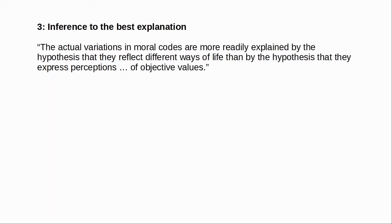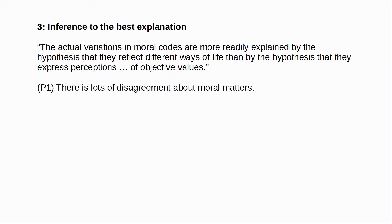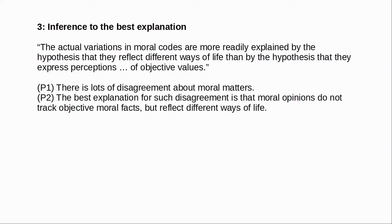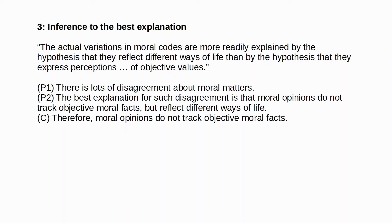Our moral values are instilled in us primarily by our culture and upbringing. What makes one person approve of monogamy over other types of relationships is that they have just participated in a monogamous culture, not that they have detected the objective moral value of monogamy. So Enoch formalizes the argument as follows: there is lots of disagreement about moral matters; the best explanation for such disagreement is that moral opinions do not track the objective facts but simply reflect different ways of life; therefore, moral opinions do not track the objective facts — which is just to say that moral realism is false.